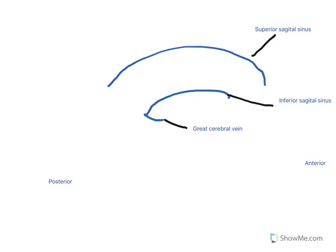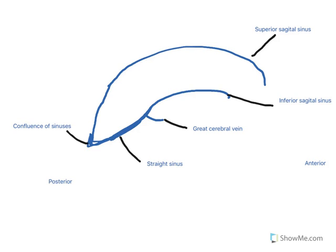Looking within the superior part of the falx cerebri, we have our superior sagittal sinus running from anterior to posterior, and our inferior sagittal sinus running below it. The inferior sagittal sinus then receives the great cerebral vein, and these two join to form the straight sinus. The superior sagittal sinus and the straight sinus drain at a point known as the confluence of sinuses, which then passes out laterally into the transverse sinuses on the right and left sides.